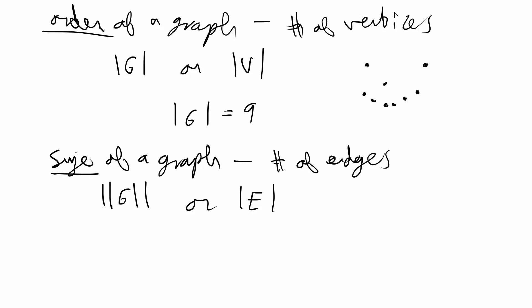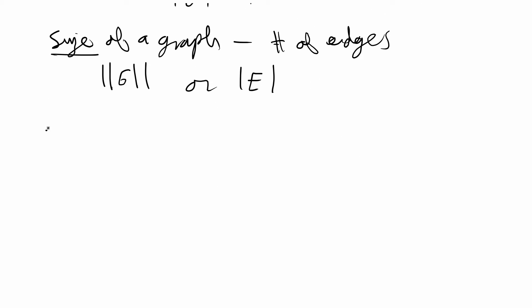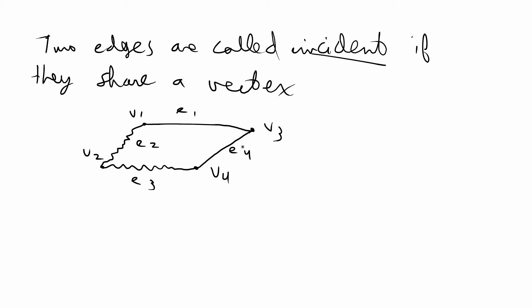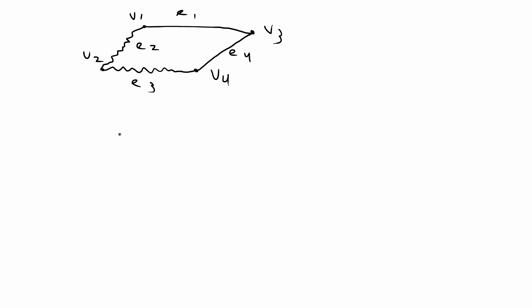Next I want to talk about adjacency and incidence. Two edges are called incident if they share a vertex. For this graph E1 and E4 are incident because they have V3 in common. E4 and E3 are incident because they have V4 in common. However, E1 and E3 do not have any vertices in common so E3 and E1 are not incident.